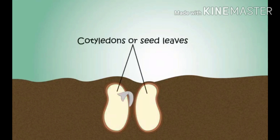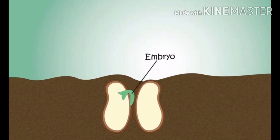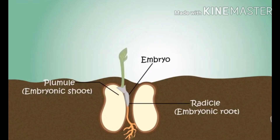When the seed gets the right amount of air, water and warmth, it starts growing into a small plant called the seedling. The baby plant is also called the embryo. It is present between the seed leaves. The embryo grows into a new plant after germination.